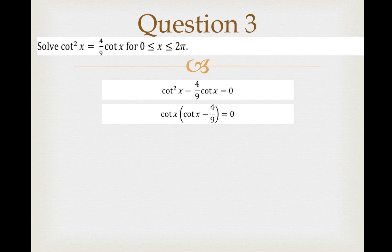Each factor now can be equated to 0, and then you will have cot x = 0 and the other factor is cot x - 4/9 = 0. We will have two equations.